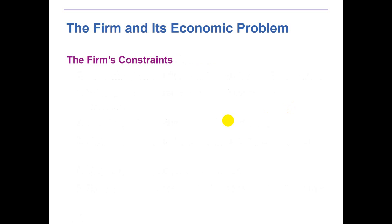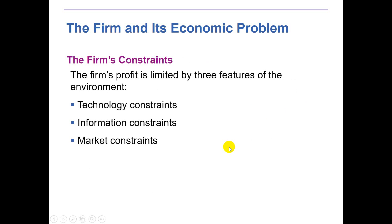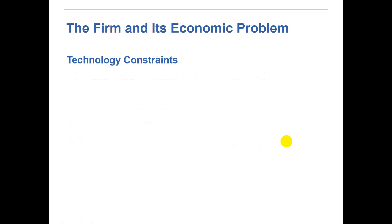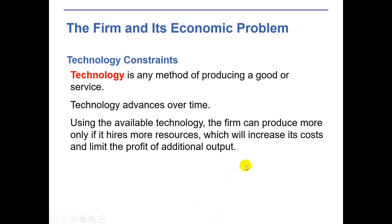A firm's profit is limited by three features of its environment: technological constraints, information constraints, and market constraints. Technology is any method of producing goods or services, and it advances over time. Using available technology, the firm can produce more only if it hires more resources, which increases costs and limits the profit from additional output. Buying the latest technology means investing a lot, which increases the cost of production and reduces profit. This is the technology constraint.